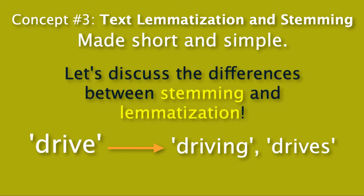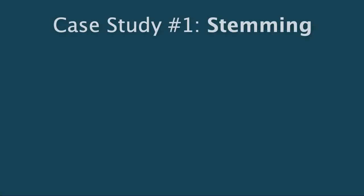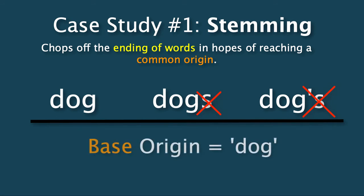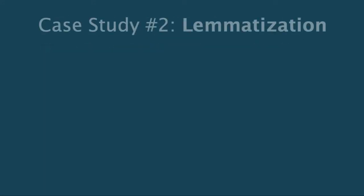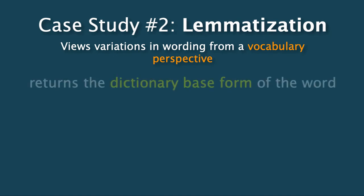Let's discuss the differences between stemming and lemmatization, and how they approach this task of simplifying varieties of a word. Stemming is rather crude in that it chops off the ends of words in hopes of reaching a common origin. For instance, if you had three words — 'dog,' 'dogs,' and 'dog's' — stemming would remove all the excess wording and arrive at the origin word 'dog.' However, lemmatization does things a little differently. It views these variations in wording from a vocabulary perspective, aiming to remove inflectional endings and return the dictionary-based form of the word, which is known as the lemma.